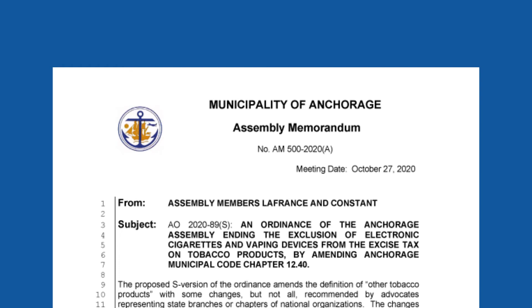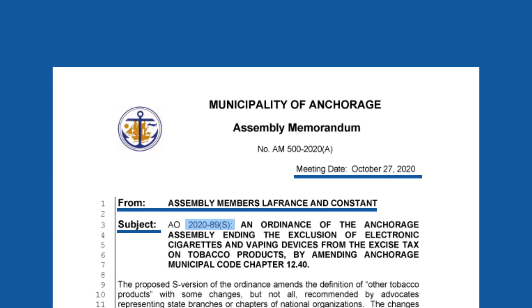Now that we know more about how ordinances are passed and what they can do, let's look at an example. We'll start by taking a look at the Assembly Memorandum. The Assembly Memorandum includes the date it was presented to the body, and the Assembly members who introduced it are located in the from section. The summary of the ordinance is in all caps as the memo's subject. It outlines the changes that were made to the amended S version and provides context for understanding the ordinance in plain English. After reading the AM, we get a general idea that the ordinance seeks to end the exclusion of electronic cigarettes and vaping products from the excise tax on tobacco products and to update the code to reflect that change. The S version also included updates to definitions of certain terms.